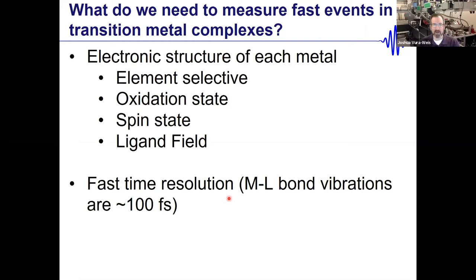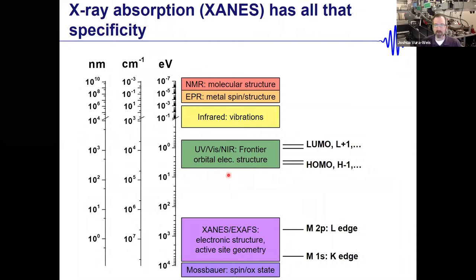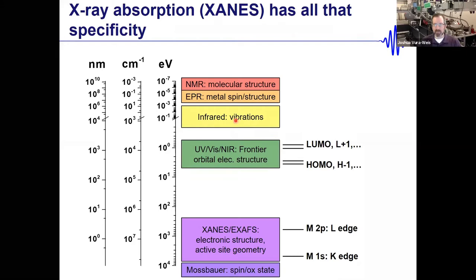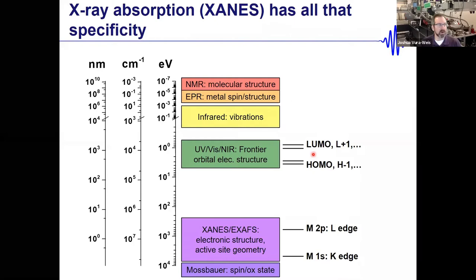The big-picture question is: where is every electron at every point in time in these systems? In undergraduate chemistry we learn about NMR, infrared, and UV-Vis spectroscopy — where we're essentially probing HOMO to LUMO. X-ray absorption is at much higher energy, probing from atomic core levels up to unoccupied orbitals. We're very familiar with K-edge spectroscopy (1s to valence) and L-edge spectroscopy (2p to valence) for transition metals.